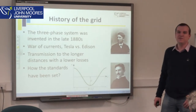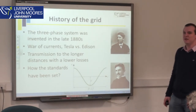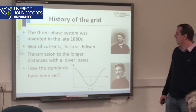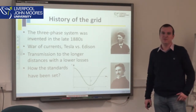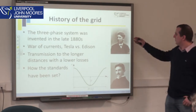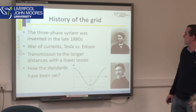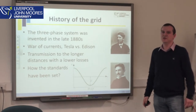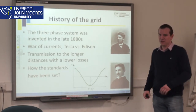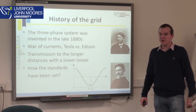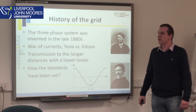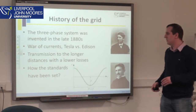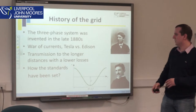The history of the three-phase grid started with the war at the end of the 19th century, well known as the War of Currents — the war between DC and AC current, or the war between two scientists: Thomas Edison and Nikola Tesla. Thomas Edison had his own company and his interest was electrification with DC current, but he had problems transferring DC current over longer distances. In that war, Nikola Tesla won the battle.